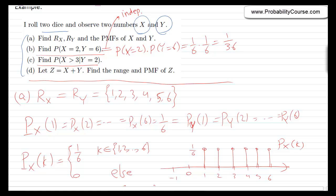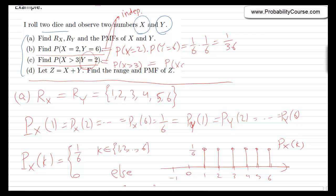Part c asks for P(x>3 | y=2). Suppose we observe y=2 and want to know the probability that x>3. Because x and y are independent, this extra information does not help us at all. We simply write this as P(x>3), since x and y are independent. P(x>3) = P(x=4) + P(x=5) + P(x=6) = 1/6 + 1/6 + 1/6 = 1/2.